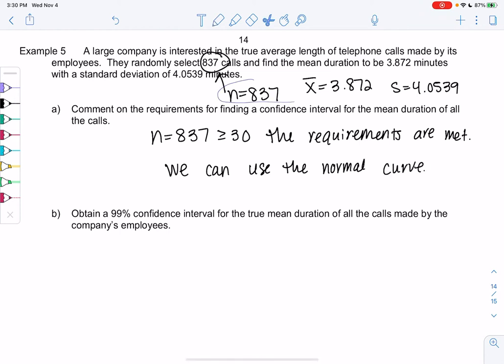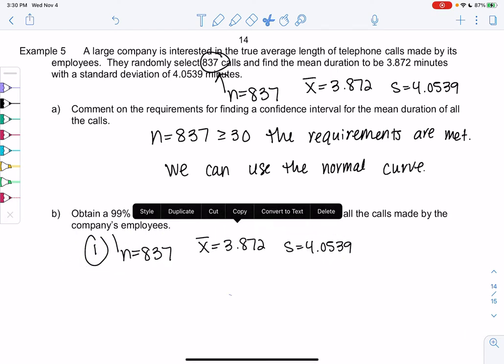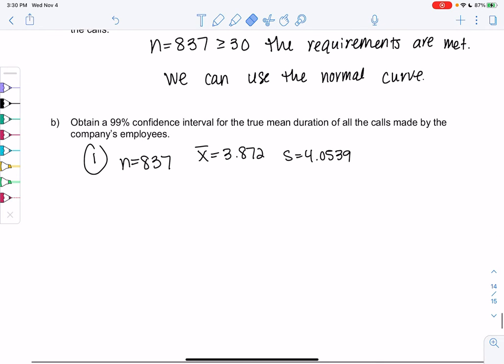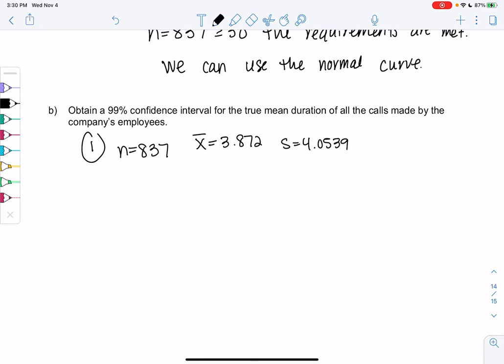Let's find a confidence interval. Step one is already done. We don't need to use one-var stat because n, x̄, and s were already given. N was 837, x̄ was 3.872, and s was 4.0539. Rather than raw data, we were already given these values, so that saves us a little bit of time.